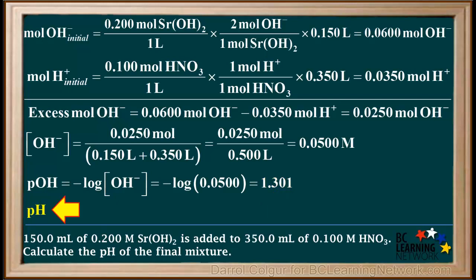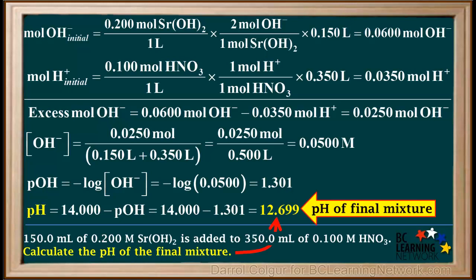Now we can calculate the pH, which is 14 minus the pOH, or 14 minus 1.301, which is 12.699. This must have three significant figures, so it's expressed to three decimal places. We have now answered the question we set out to answer. The pH of the final mixture is 12.699.